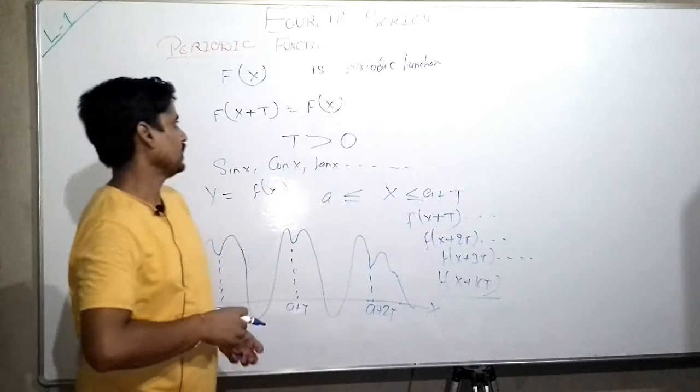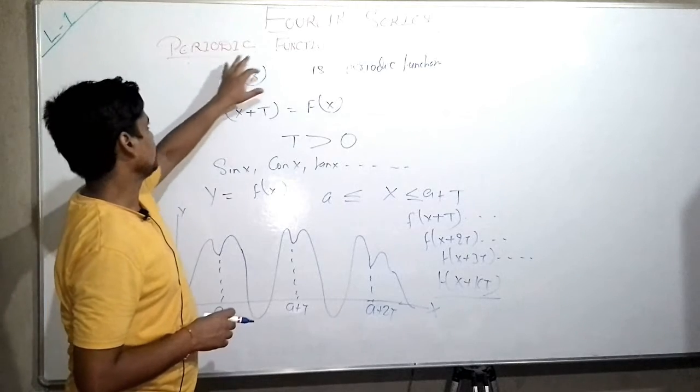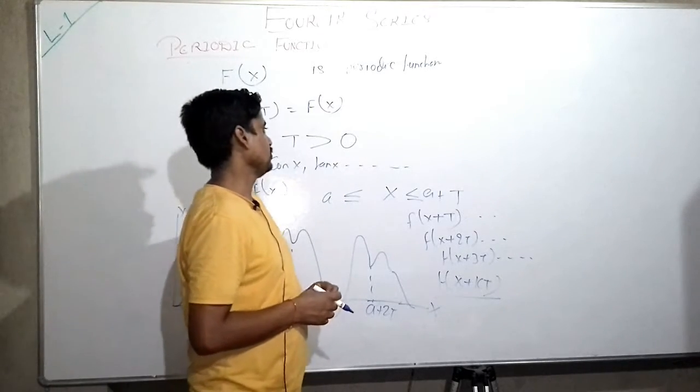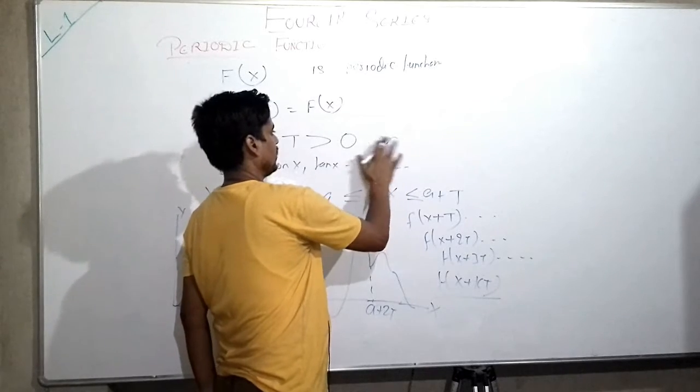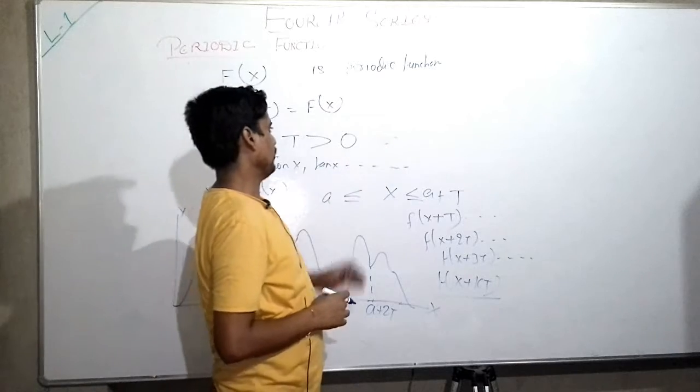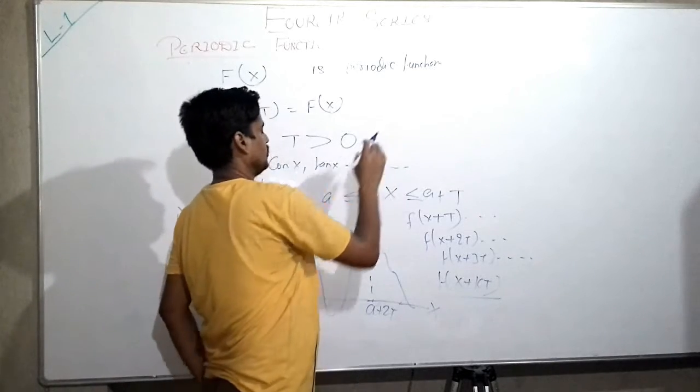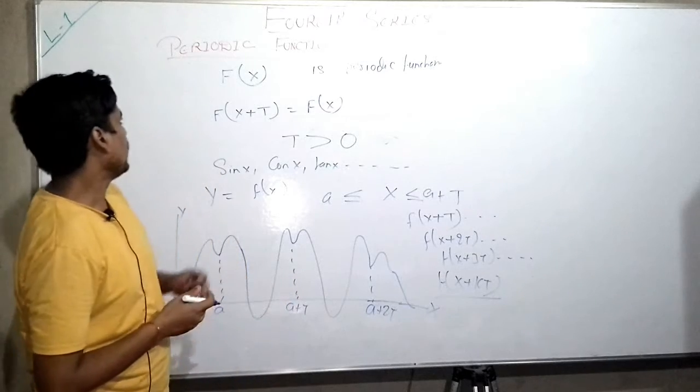Also, in electromagnetic theory or in electrical engineering, this Fourier analysis can be used to separate different types of waves or analyze different kinds of waves which are superimposed on each other.